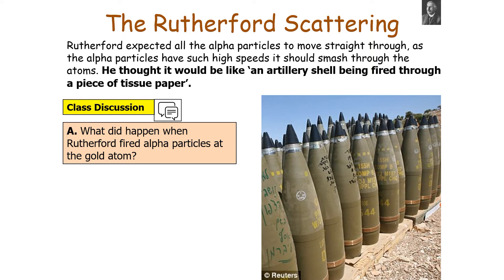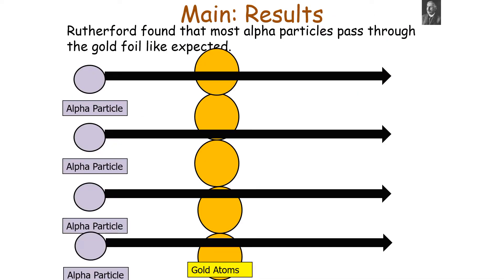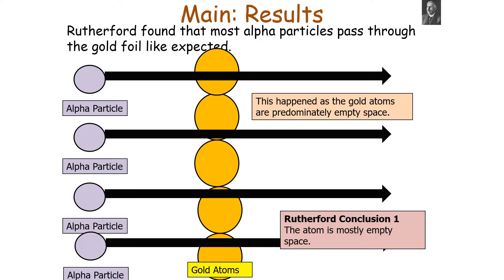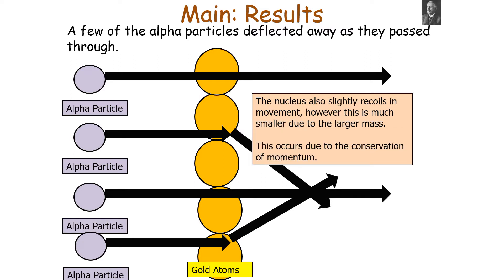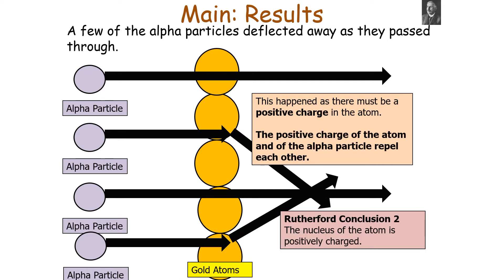But what actually happened? Rutherford found that most alpha particles passed straight through the gold foil as expected — this happened because the gold atoms are predominantly empty space. The first conclusion is that the atom is mostly empty space. A few alpha particles deflected away as they passed through; alpha particles are always deflected away from the nucleus, which also recoils slightly due to conservation of momentum. This repulsion occurs because there must be a positive charge in the atom — the positive charge of the atom and the positive charge of the alpha particle repel each other. The second conclusion was that the nucleus of the atom must be positively charged.